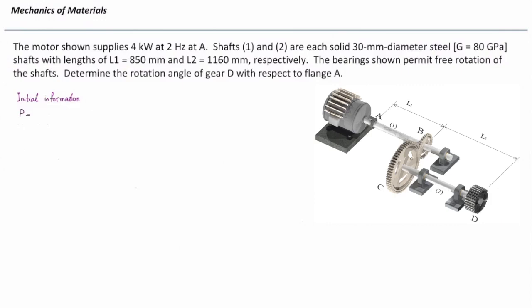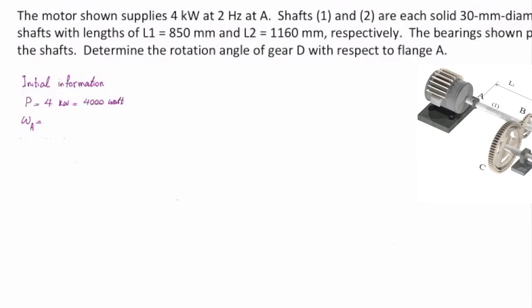Then we need to determine how much twist in each element. First, let me write down what we have. Power is 4 kW, which is equal to 4000 W. Angular velocity is 2 Hz, which is equal to 2 times 2 pi, which is 4 pi, or 12.5. The diameter of the first shaft is equal to the diameter of the second shaft is 30 mm. And J1 will be equal to J2, that would be pi over 32 diameter to the fourth. And that is 79,520 mm to the fourth.